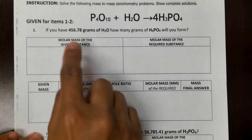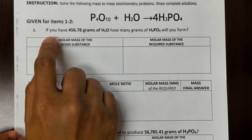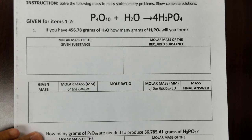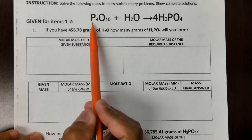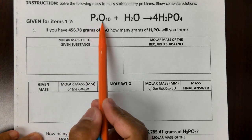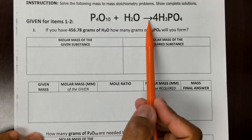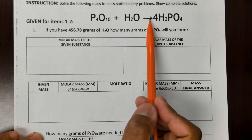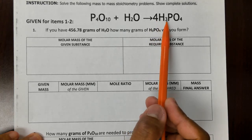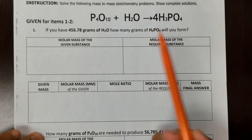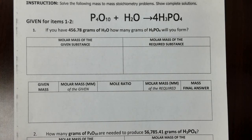Let's study this example. We are given the balanced chemical equation P4O10 plus H2O with an arrow to 4H3PO4. However, if you examine this equation carefully, it is not actually balanced.